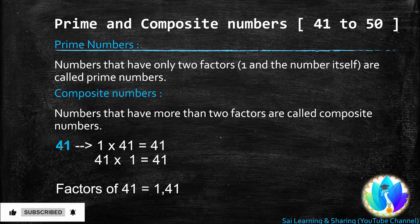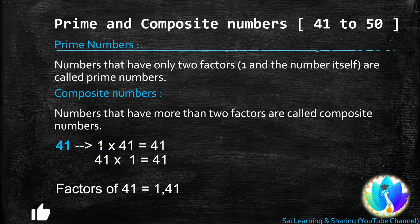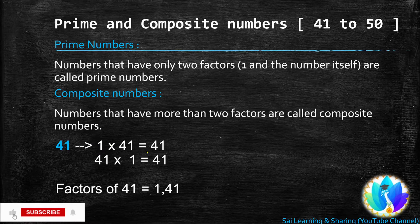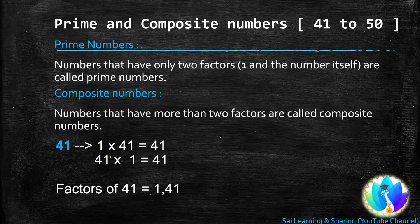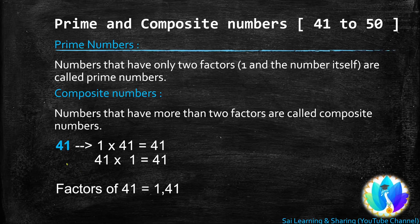Let us see 41. 1 is a factor of every number, so 1s are 41, 41. Here, there is a simple and easy method for finding whether a two-digit number is prime or composite. We will learn the tables of 2 to 12. Have any chance to see 41 in any table?